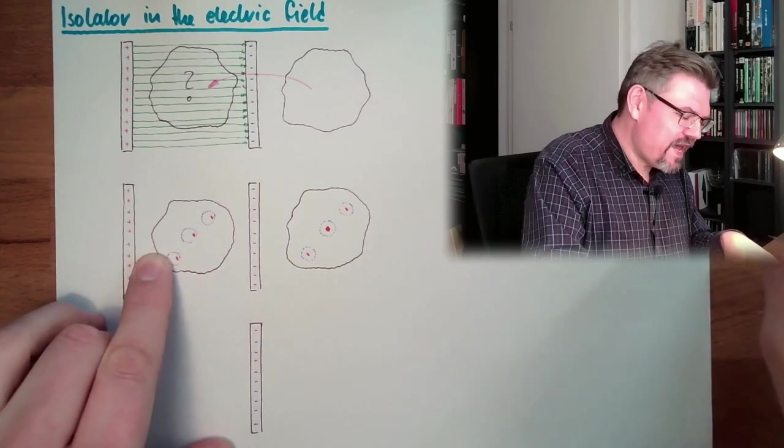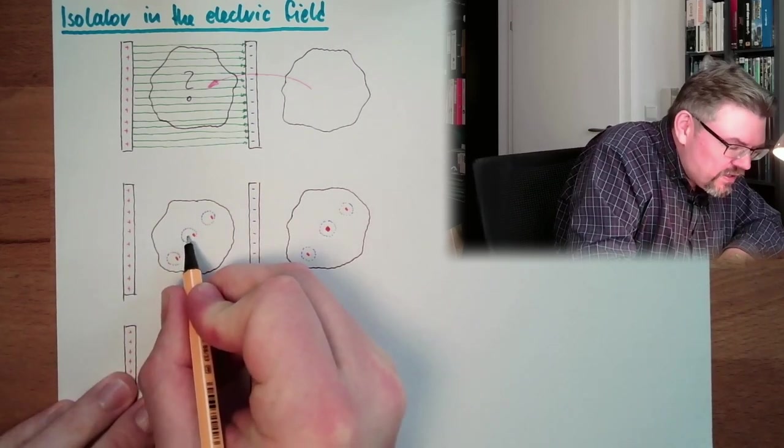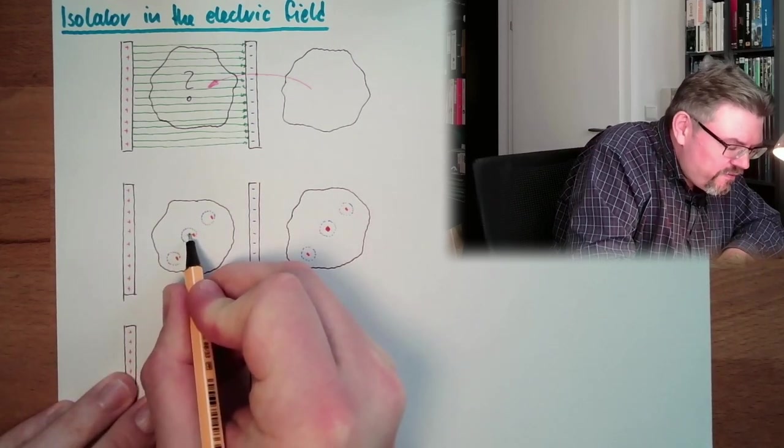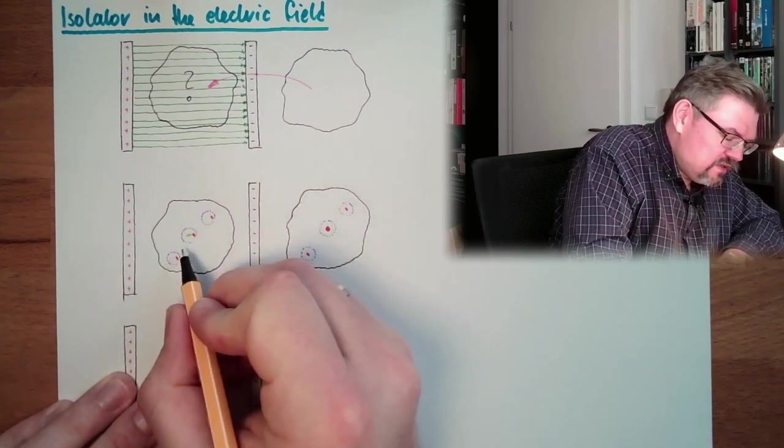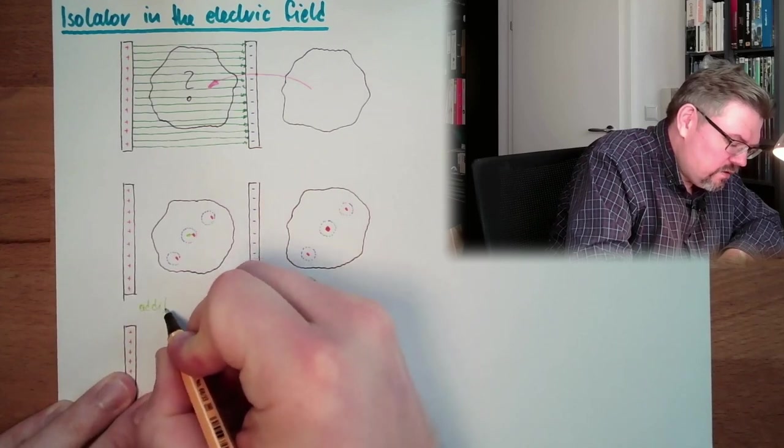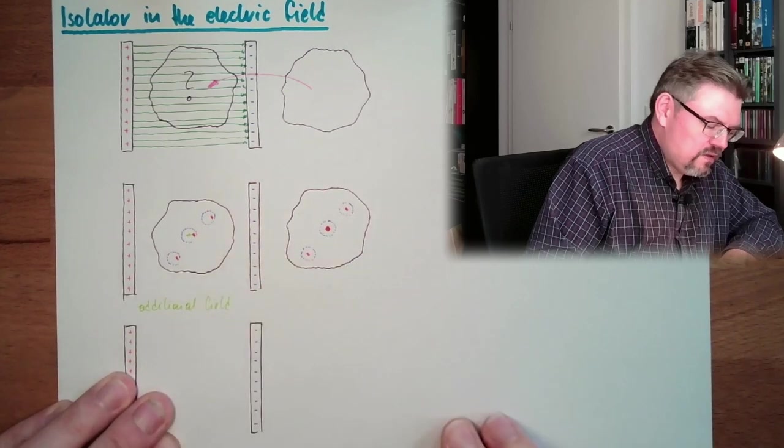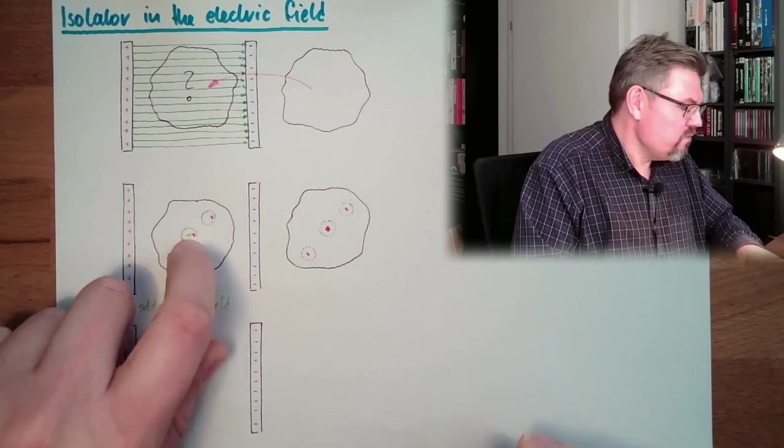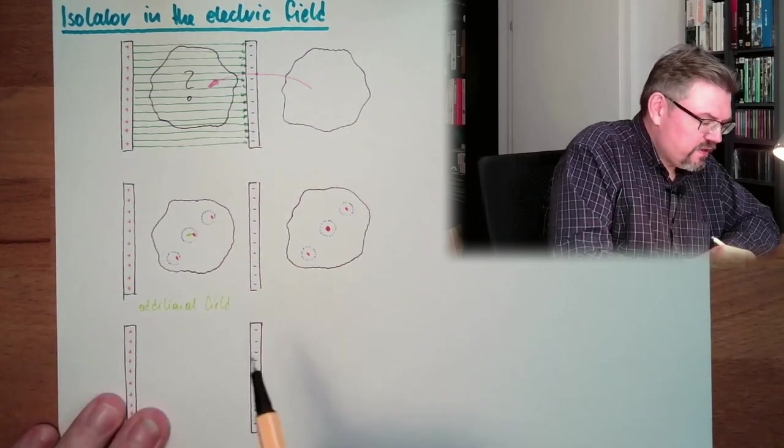What is happening there is that we have here inside, because here is the middle point, so we have here a small additional field. An additional field which is pointing, because the outside field is still pointing from the positive side to the negative side, right?